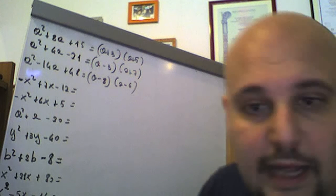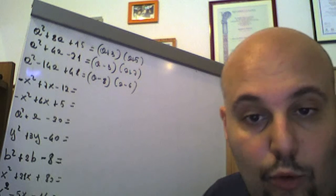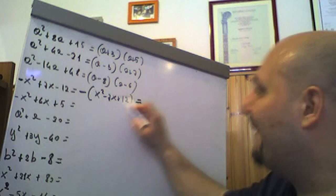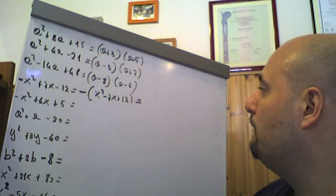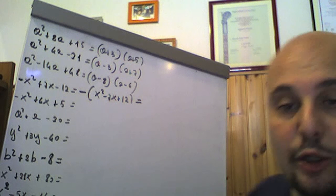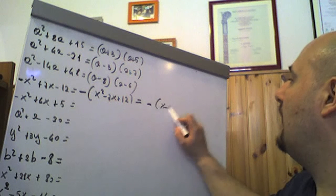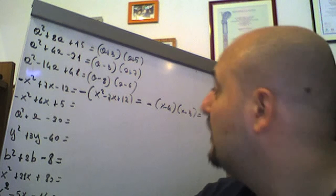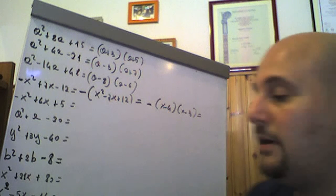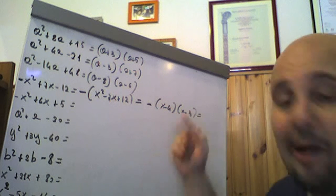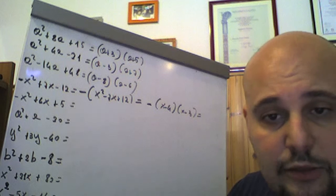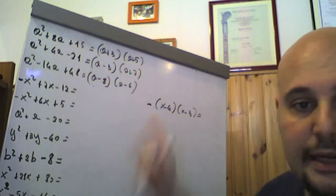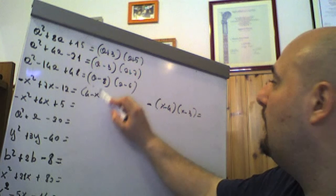−x² + 7x − 12: questa è una novità, perché il coefficiente del termine x² non è 1 ma è −1. Raccogliamo dunque a fattore comune un −1, ottenendo x² − 7x + 12. Guardando 12, abbiamo −4 per −3, con −4 + (−3) = −7. Quindi questo è −(x − 4)(x − 3), che si può anche scrivere come (4 − x)(x − 3), moltiplicando quel −1 per x − 4.